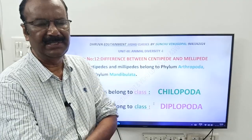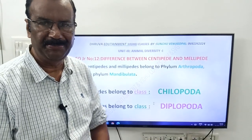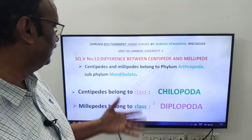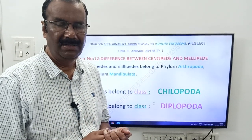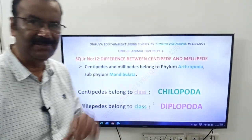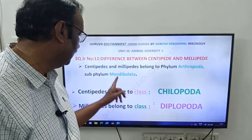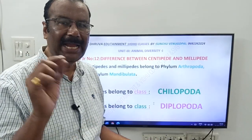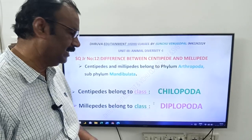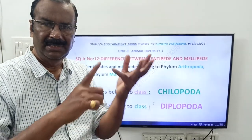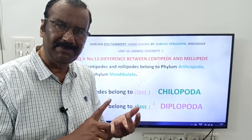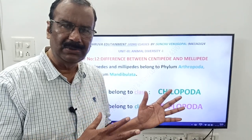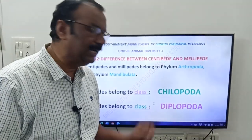What are centipede and millipede? The centipede and millipede belong to phylum Arthropoda because they have jointed legs. Both centipede and millipede belong to subphylum Mandibulata. Centipede belongs to class Chilopoda, and millipede belongs to class Diplopoda.